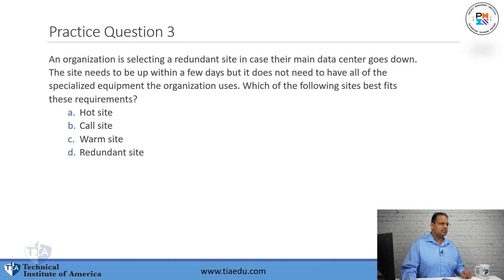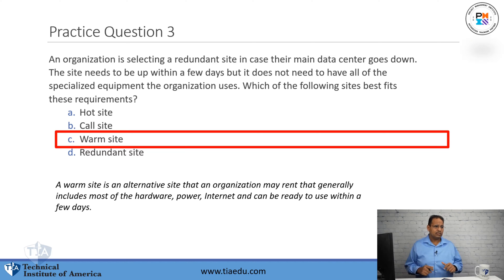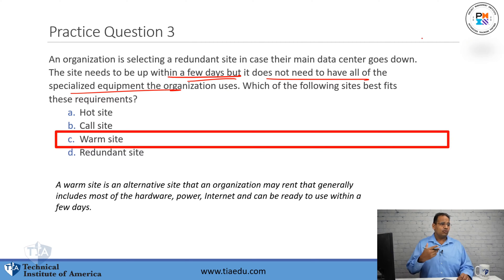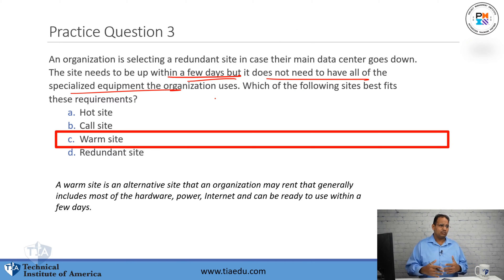Question number three: an organization is selecting a redundant site in case their main data center goes down. The site needs to be up within a few days, but it does not need to have all of the specialized equipment the organization uses. Which of the following sites best fits these requirements? A, hot site. B, call center. C, warm site. D, redundant site. The answer is a warm site. The keywords in the question are 'within a few days' and 'does not need all the specialized equipment.' A hot site comes with all specialized equipment and may take a day or so. A redundant site has all your equipment and data and can come up nearly instantly. A warm site contains some of the equipment — not all — and bringing the specialized equipment might take a few days.